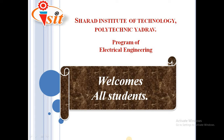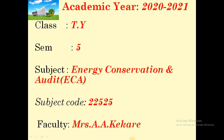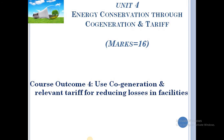Hello everyone. Sharon Institute of Technology Polytechnic, Program of Electrical Engineering welcomes all students. For this academic year 2021, for the final year Electrical Diploma student, there is a subject Energy Conservation and Audit. Subject code is 22525, and this lecture is conducted by Mrs. A.A.K. We have started Unit 4: Energy Conservation through Co-Generation and Tariff. Marks for this particular unit are 16 marks.